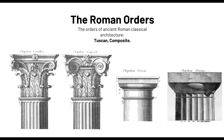Moving on — the Roman orders. This is a review; I know our lesson is Romanesque, but for you to understand it exactly, since it resembles Roman architecture, let's cover the Roman orders. The orders of ancient Roman classical architecture are Tuscan and Composite. Now, before the Roman orders there are the Greek orders — and this always comes out in the board exam. The three Greek orders are Doric, Ionic, and Corinthian. If you answered that, congratulations — most likely you already have three points in History of Architecture on the board exam.